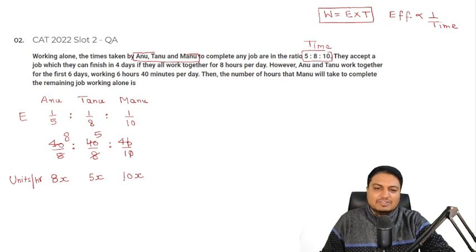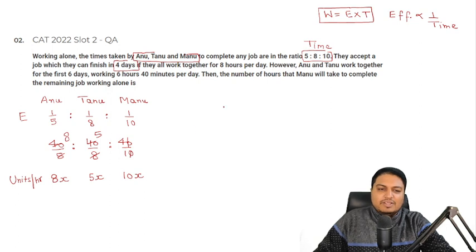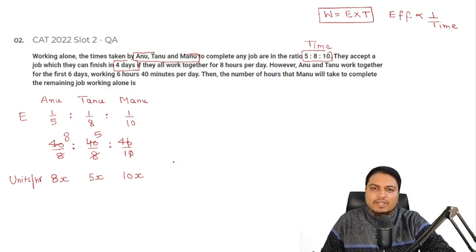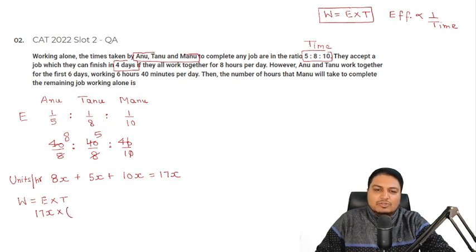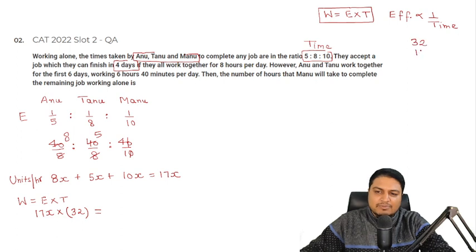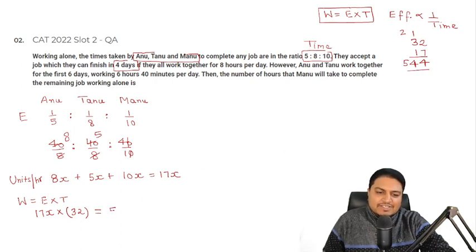It is given that all three together can finish the job in 4 days working 8 hours per day. So total time = 4 × 8 = 32 hours. Their combined efficiency is 8x + 5x + 4x = 17x units per hour. Total work = 17x × 32 = 544x units.